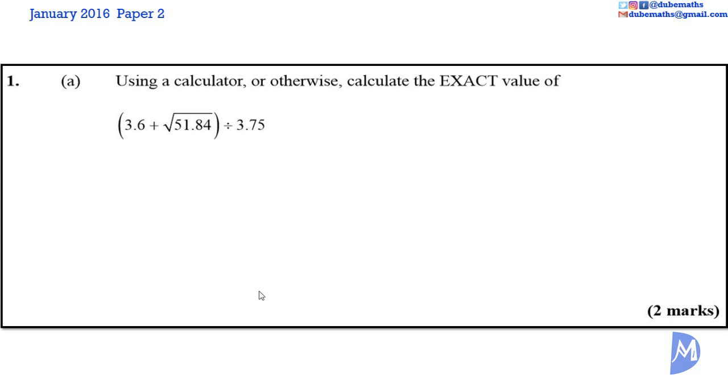Within the brackets, we have an addition and a power. We have to do the power first and then add. So the first thing we do in this problem is to find the square root of 51.84.